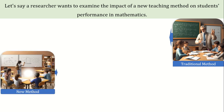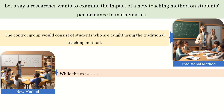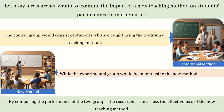Second is the new teaching method whose impact on the students we want to know. You may assume that in the new teaching method, students are also participating in teaching activities. The control group would consist of students who are taught using the traditional teaching method, while the experimental group would be taught using the new method. By comparing the performance of the two groups, the researcher can assess the effectiveness of the new teaching method.